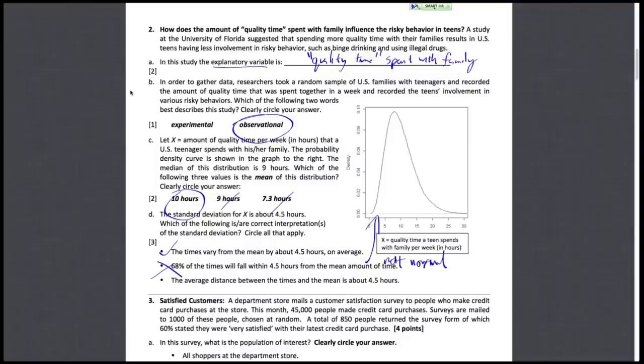And then lastly, the average distance between the times and the mean is about 4.5 hours. And this is just the first one with some of the words changed around. We still talk about average distance between the times and the mean, and we specify that distance. So this is good. So we can circle 1 and 3 here.